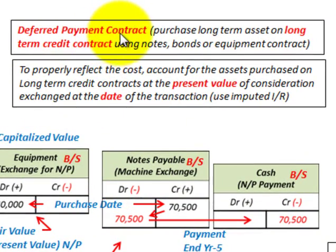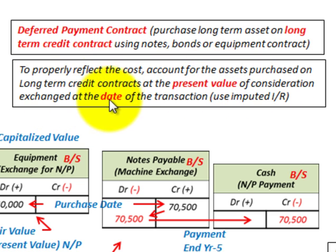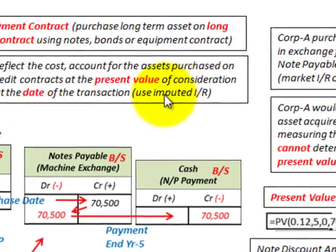We're going to be looking at a deferred payment contract to purchase a long-term asset on a long-term credit contract, using either a note or a bond — here an equipment contract. We'll specifically use a note to properly reflect the cost. You account for assets purchased on this long-term credit contract at their present value of the consideration exchanged at the date of the transaction, using the imputed interest rate.